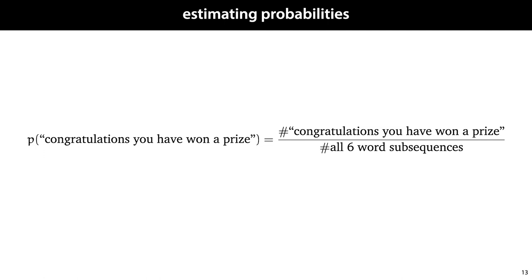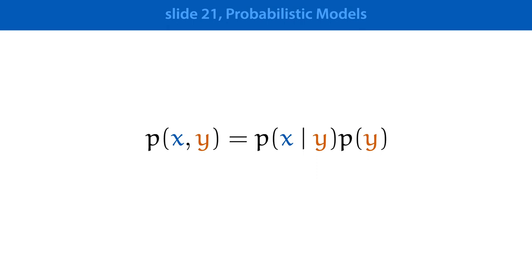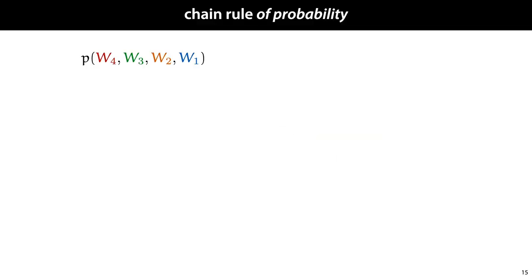And if our sequences get longer, like full emails instead of sentences, we'll have no chance of collecting a dataset where every email we're interested in has been seen before. What we need to do is break our sentence up into subsequences, estimate their probability, and combine the probabilities of the subsequences to give us the probability of the whole sentence. To do that, we'll use a simple property of probability: the fact that we can decompose a joint distribution into a marginal on one variable times the probability of the rest conditioned on that variable. This gives us the chain rule of probability.